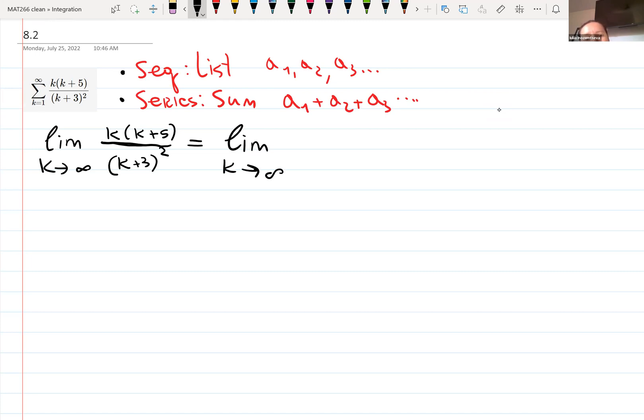Let's distribute. If you don't remember how to do limits, usually we perform some kind of distribution to see what's going on. k squared plus 5k at the numerator. Denominator, you could leave it as it is, or you can distribute. We're using square of sum formula, k squared plus 6k plus 9.